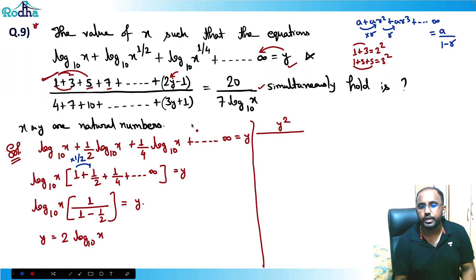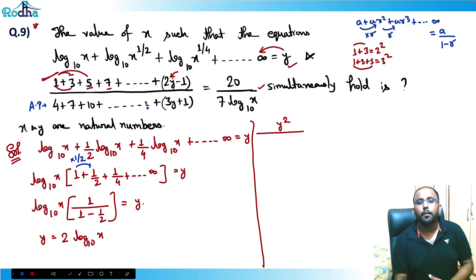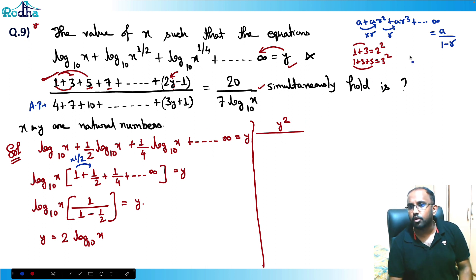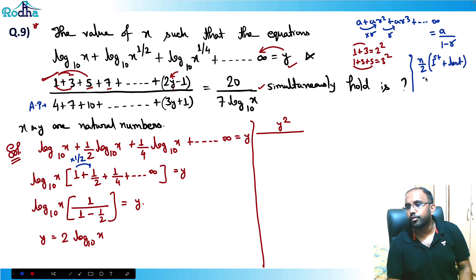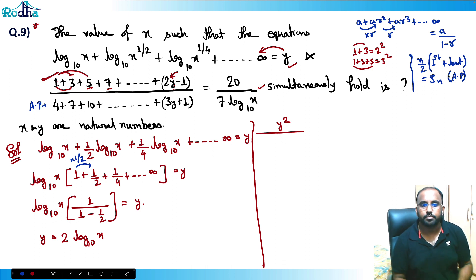The other series — 4, 7, 10, ... — is an AP with common difference 3. The sum of n terms of an AP is (n/2) × (first term + last term). The terms are of the form 3y + 1: putting y=1 gives 4, y=2 gives 7, y=3 gives 10. So the number of terms here is y.